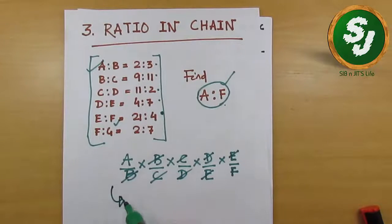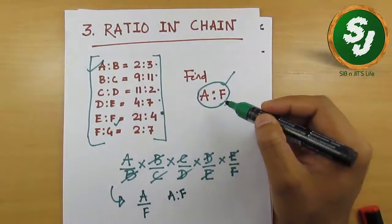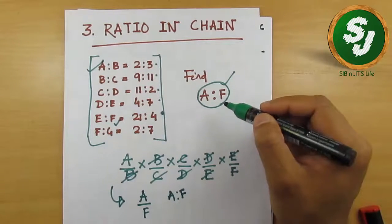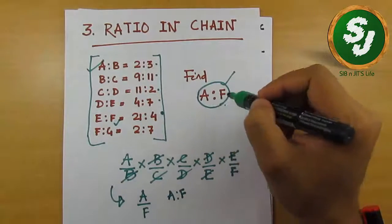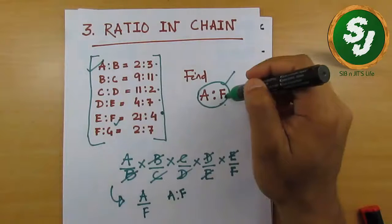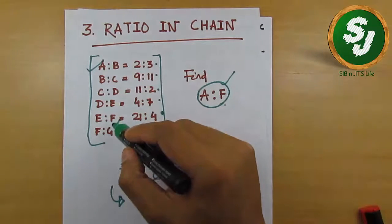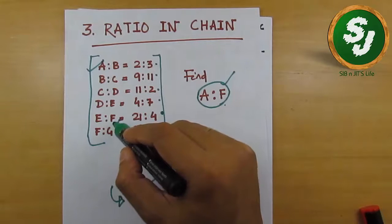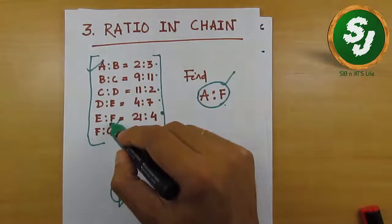So this chain will be helpful to answer the question. How will you get the value of A:F? First, look at A, then F. Look at the ratio which is ending at F. So here, this is F—it is ending with F. This F will not be useful; this F will be useful. So you have to multiply these five ratios directly to find the value of A to F.